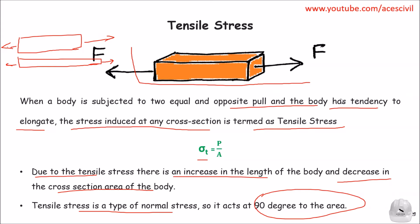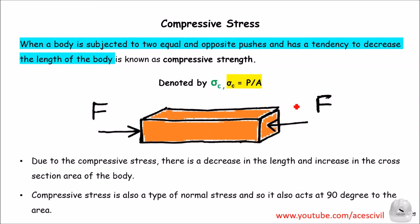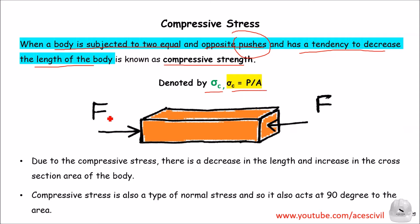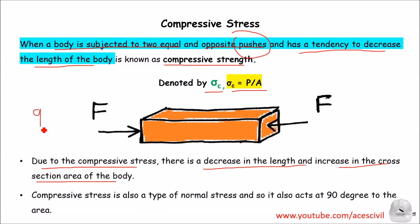The second type of stress is compressive stress. As you can see in the diagram, compressive stress occurs when a body is subjected to equal and opposite pushes — unlike tensile which involves pulling — and it has a tendency to decrease the length of the body. It is denoted by sigma C and is equal to P upon A. Due to compressive stress, there is a decrease in length and an increase in cross-sectional area, which is opposite to tensile stress where there is an increase in length and decrease in cross-sectional area. Compressive stress also acts at 90 degrees.